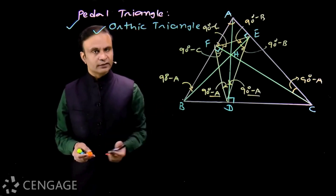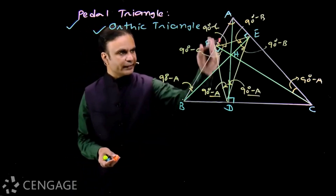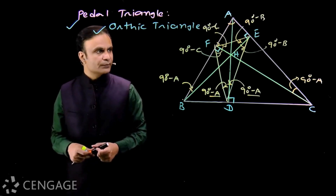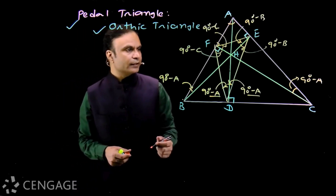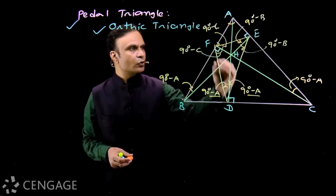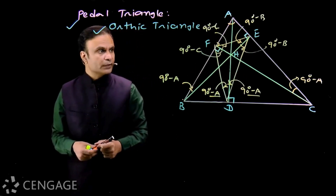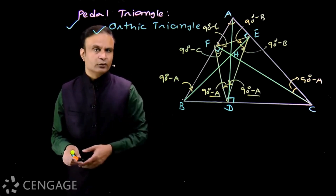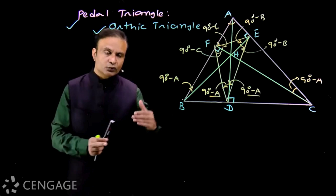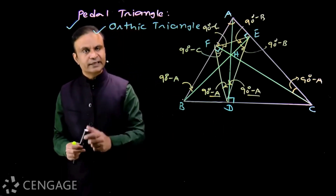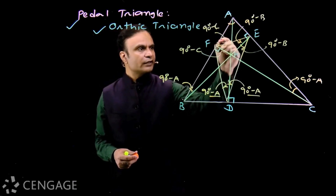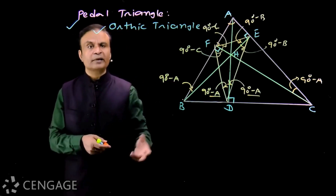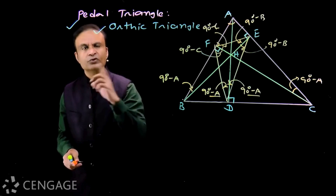That means the altitude from B is the internal angle bisector of angle E, and the altitude from C is the internal angle bisector of angle F in triangle DEF. Therefore, the three altitudes AD, BF, CH of triangle ABC, which meet at orthocenter H, are the internal angle bisectors of triangle DEF. Since internal angle bisectors meet at the incenter, the orthocenter of triangle ABC is the incenter of triangle DEF. This is one of the most important findings.